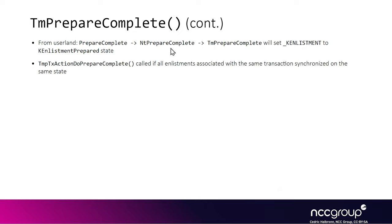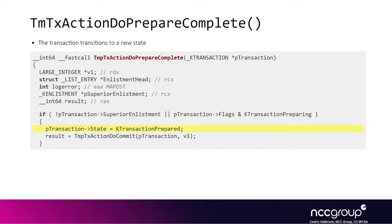This shows the list of functions called from the PrepareComplete API, which calls into the NtPrepareComplete syscall, which then calls TmpPrepareComplete. The actual callback function is called when all enlistments are in the preparing state, meaning they can transition to prepared. The code snippet shows the transaction also transitions to the prepared state. Since we know the flags from the public enum and have updated all the structures, we can easily find references to flags in the reversed KTM code.